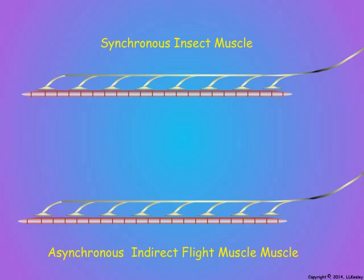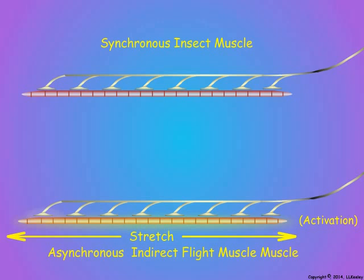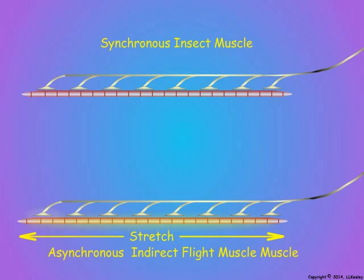Indirect flight muscles of insects with rapid wing beats are asynchronous and do not undergo only a single contraction for each motor nerve impulse. Instead, the motor nerve impulse activates indirect flight muscles. Activation is a state of constant excitation such that if the muscle fiber undergoes a stretch, there is an immediate, rapid, opposing increase in tension and a sharp, nearly isometric contraction by the activated fiber, followed by instantaneous relaxation in the tension. If there are repeated quick sharp stretches of the activated fiber, it can contract 15 to 40 times from a single activating motor impulse.